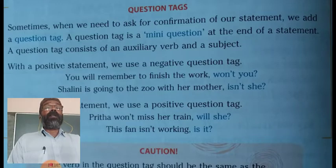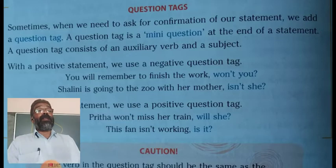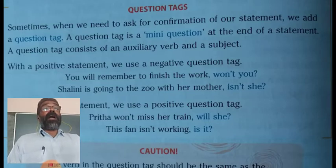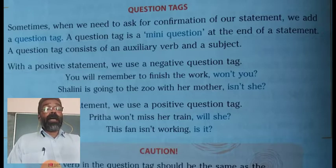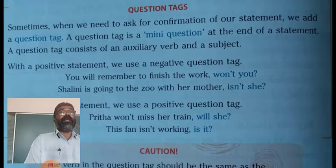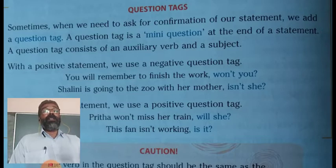For example: 'You will remember to finish the work,' and the tag is 'won't you?' — so: 'You will remember to finish the work, won't you?' This is a question tag. Question tags are not asked to get an answer in yes or no; it is just to assert or affirm what we said in the statement. In order to confirm it, we make the short question at the end of the sentence.